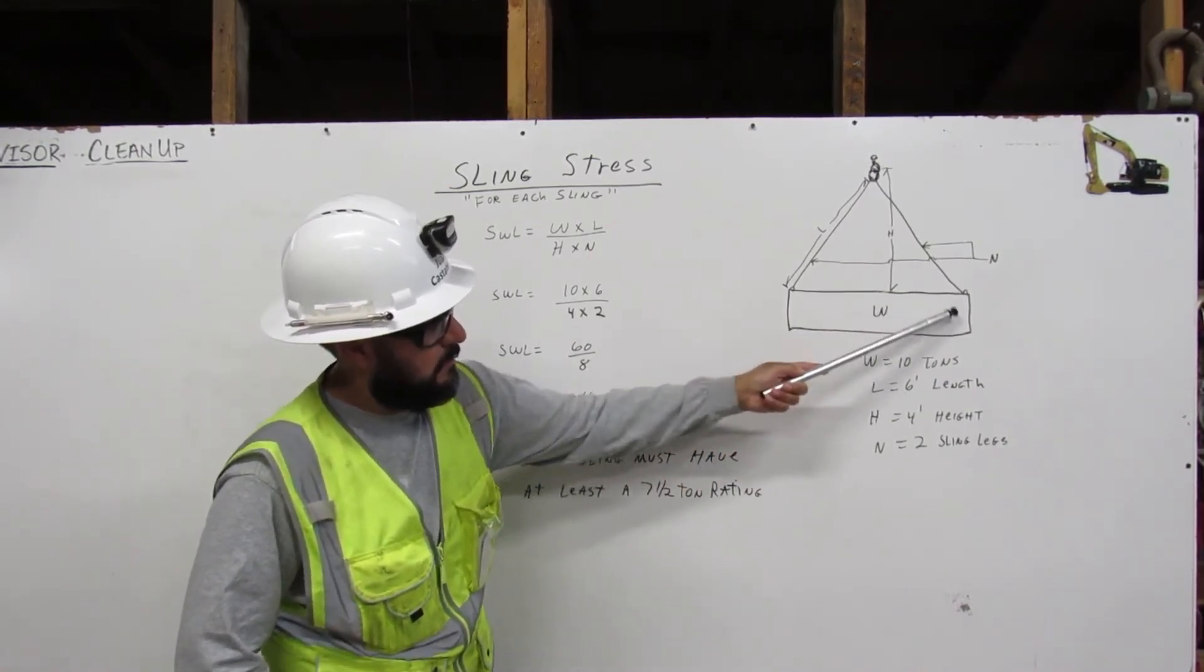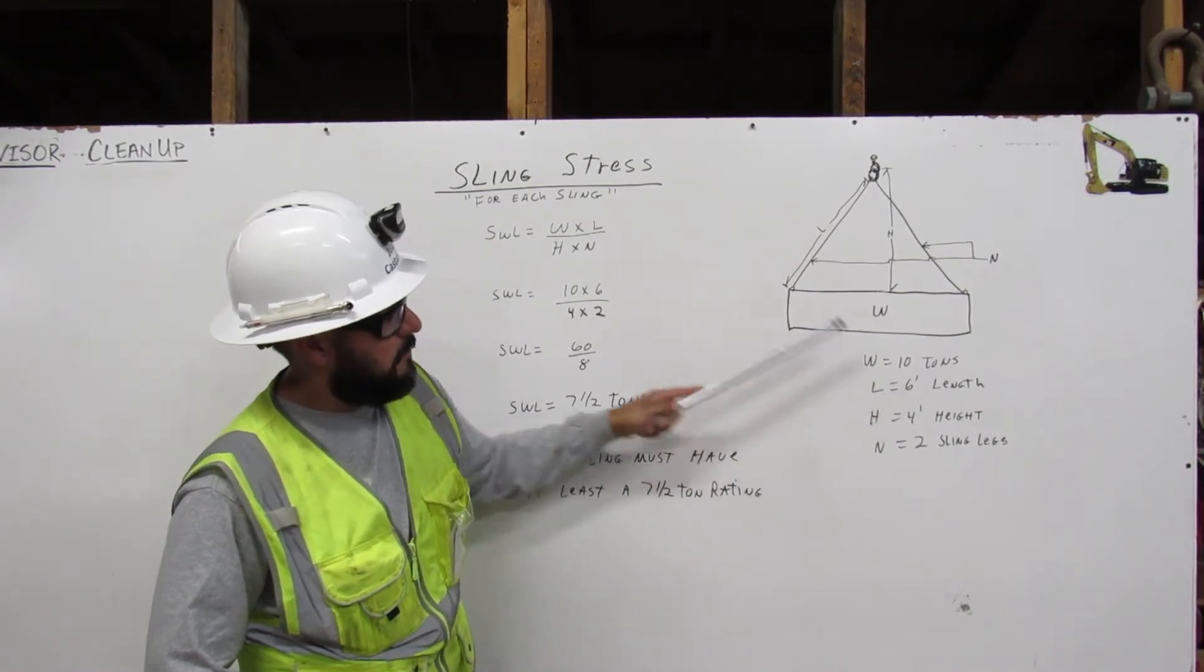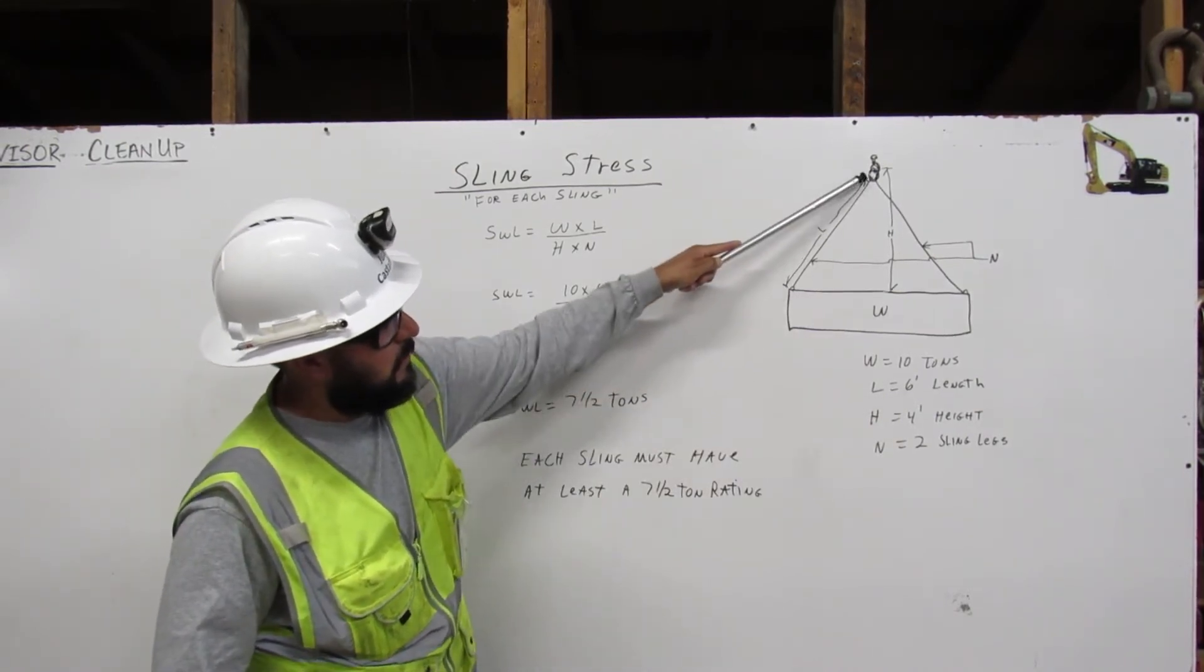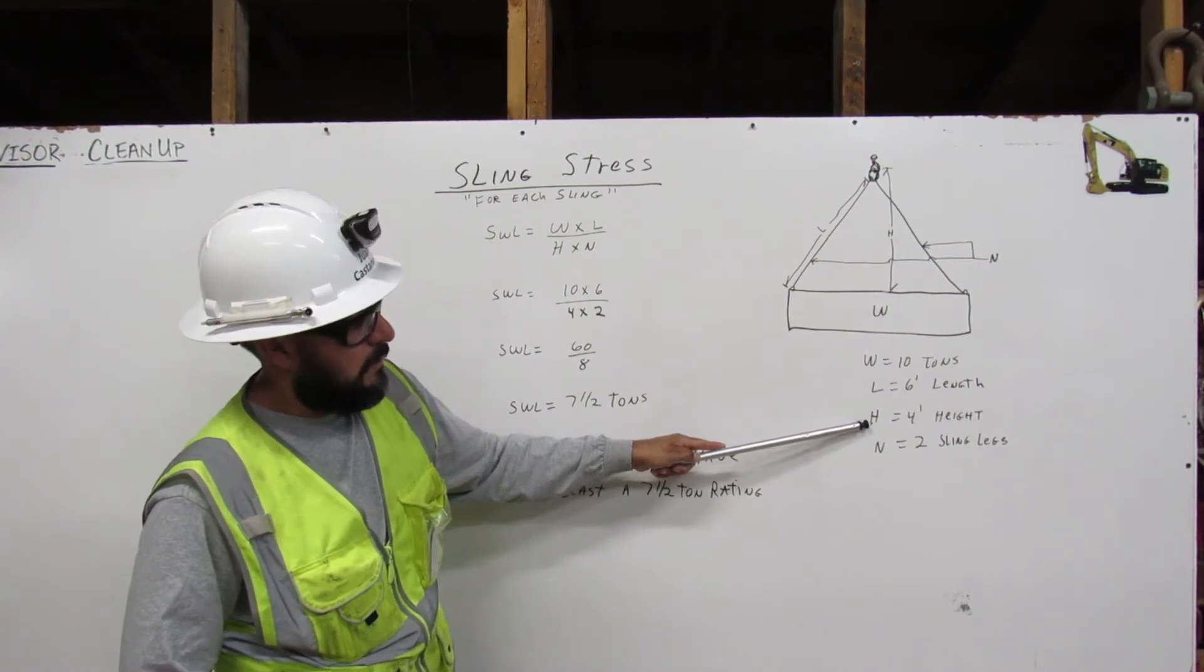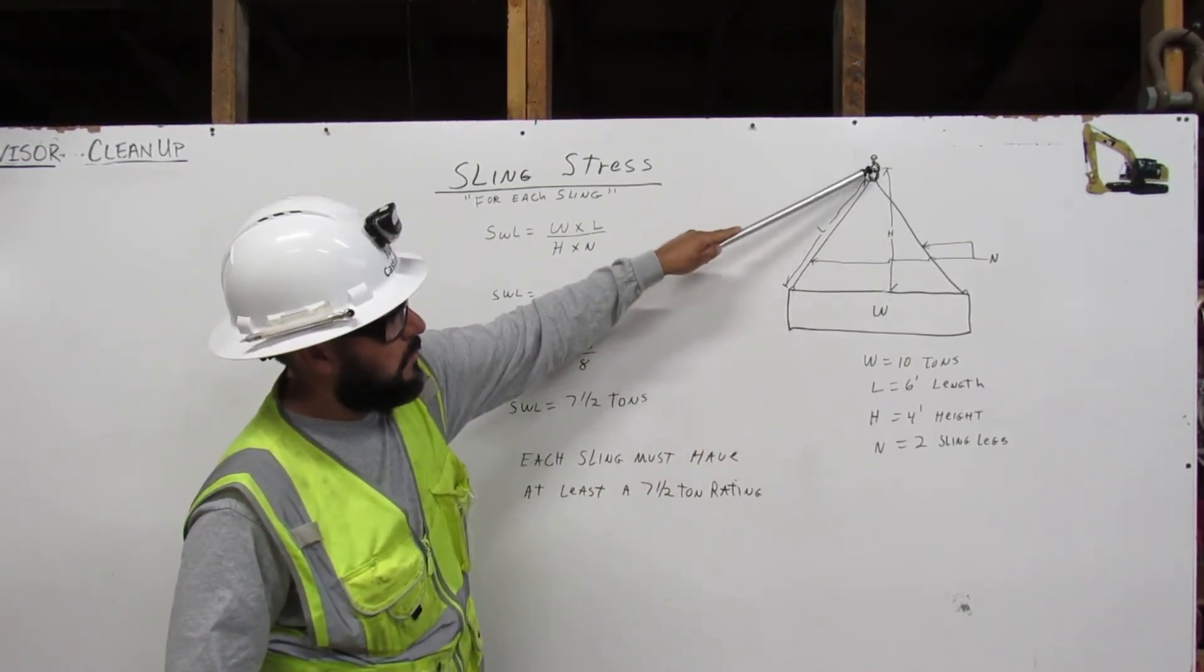The weight is 10 tons. The length is 6 feet from this point to that point. The height is 4 feet from the top of the weight to the shackle.